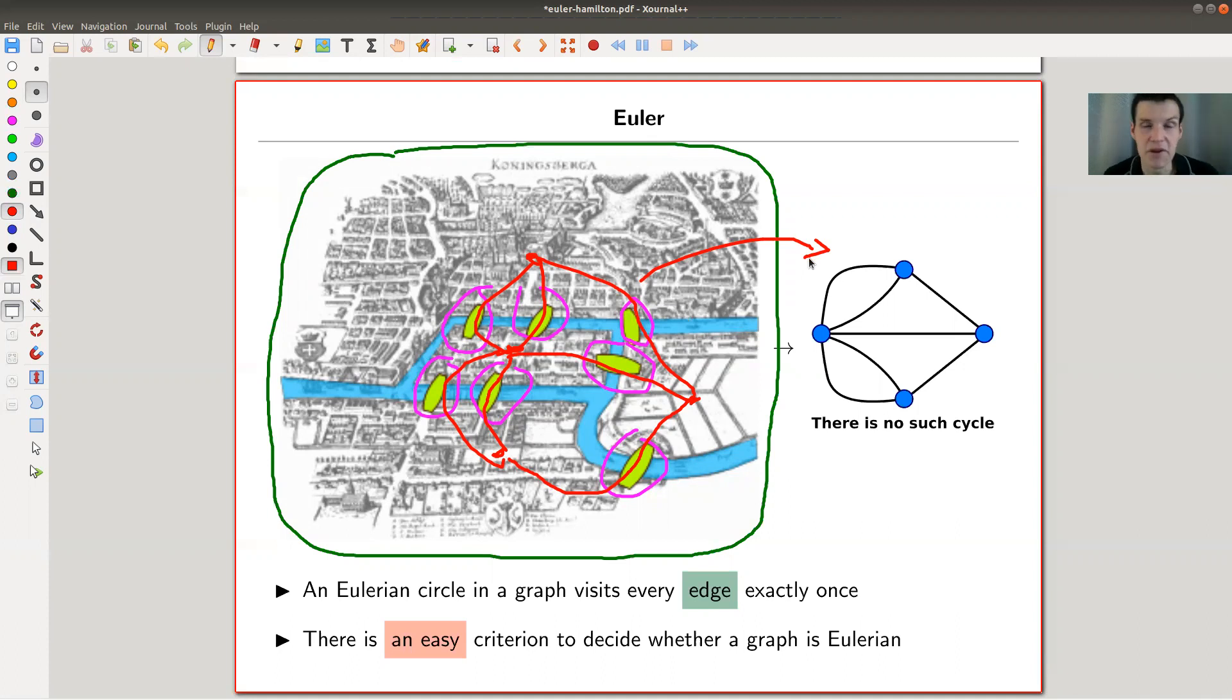If you do this for the Königsberg puzzle you end up with this graph on the right. Euler argues: we want to find a path passing each edge exactly once. This vertex has three adjacent edges. If I go in here and out here, there's one edge left, which means this vertex needs to be my starting or end point because it has an odd number of adjacent edges.